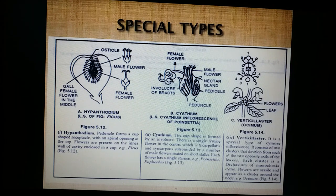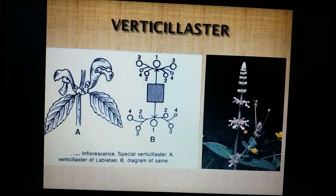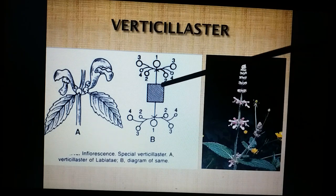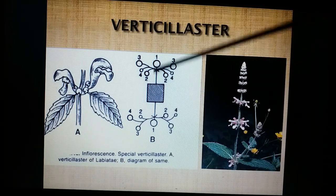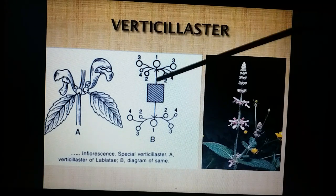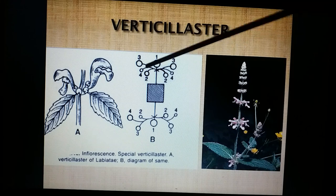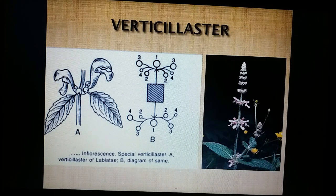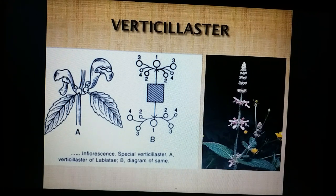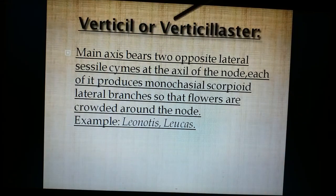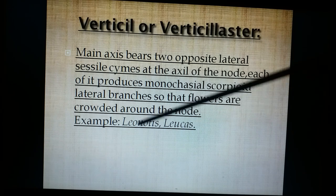Now the special types of inflorescence: verticillaster, cyathium, and hypanthodium. Verticillaster means false whorl. A dichasial cymose inflorescence develops from the axil of leaves; from the branches of the dichasium, scorpioid monochasial cymes develop. But with reduced peduncles and pedicels the whole thing appears to be arranged in whorls — in fact they are not in true whorls, hence called false whorls or verticillaster. Examples are Leonotis and Leucas, characteristic of Labiatae/Lamiaceae.